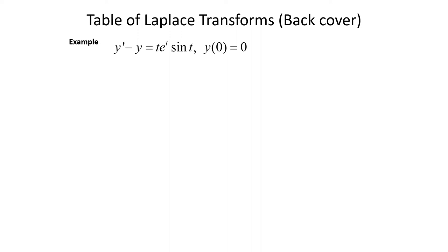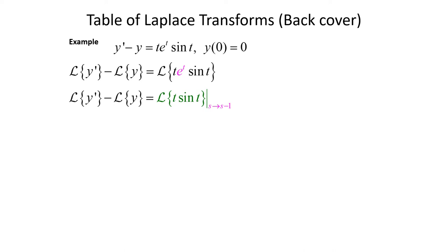For our next example we want to solve y prime minus y equals t times e to the t times the sine of t, with initial condition y(0) equals zero. To start, we'll take the Laplace transform of everything. The Laplace transform of y prime minus the Laplace transform of y equals the Laplace transform of t times e to the t times sine of t. That e to the t gives us translation, so we can apply the first translation theorem in s. This will equal the Laplace transform of t times sine of t, translated from s to s minus one.